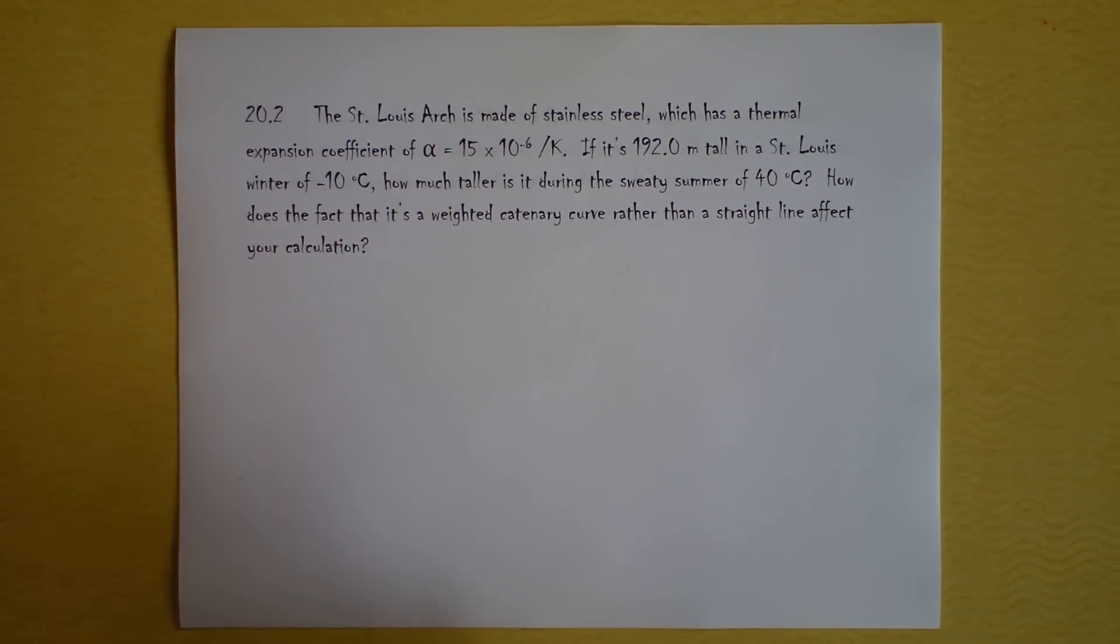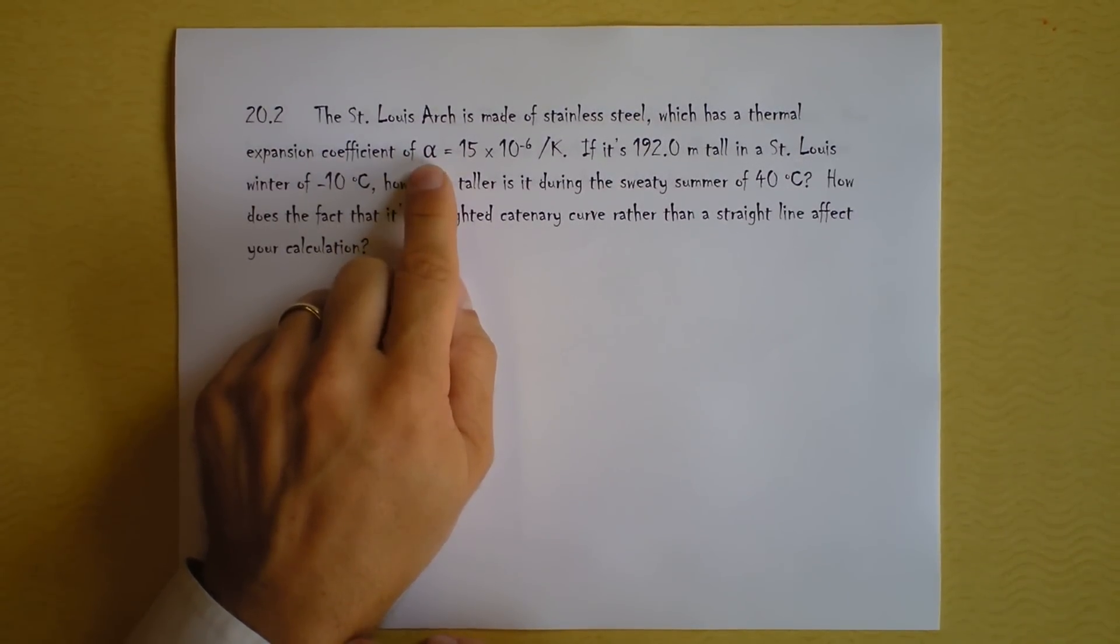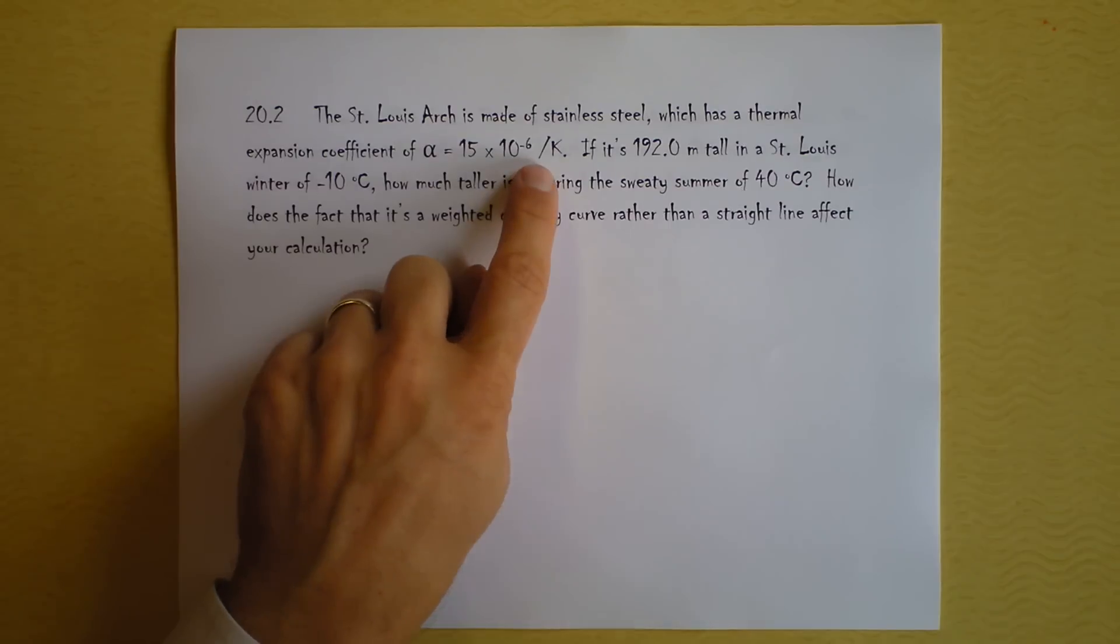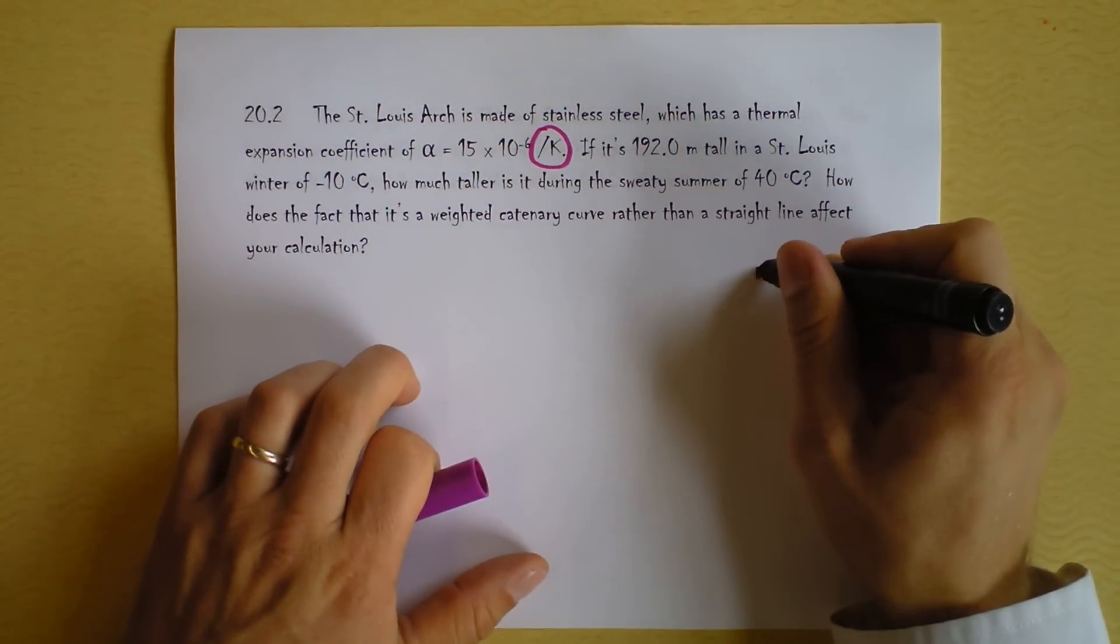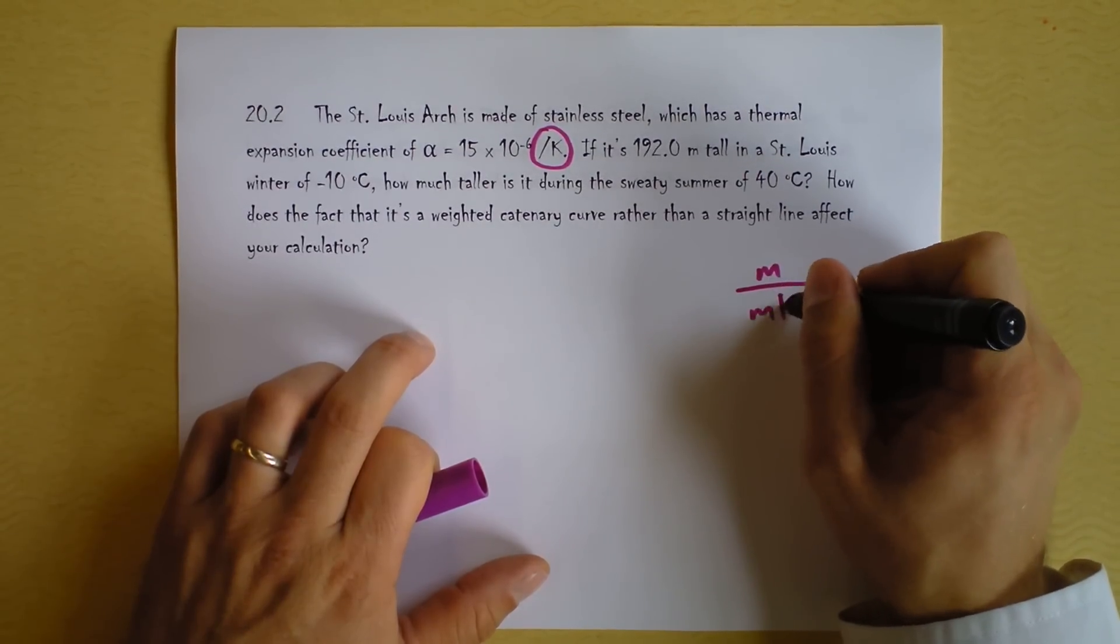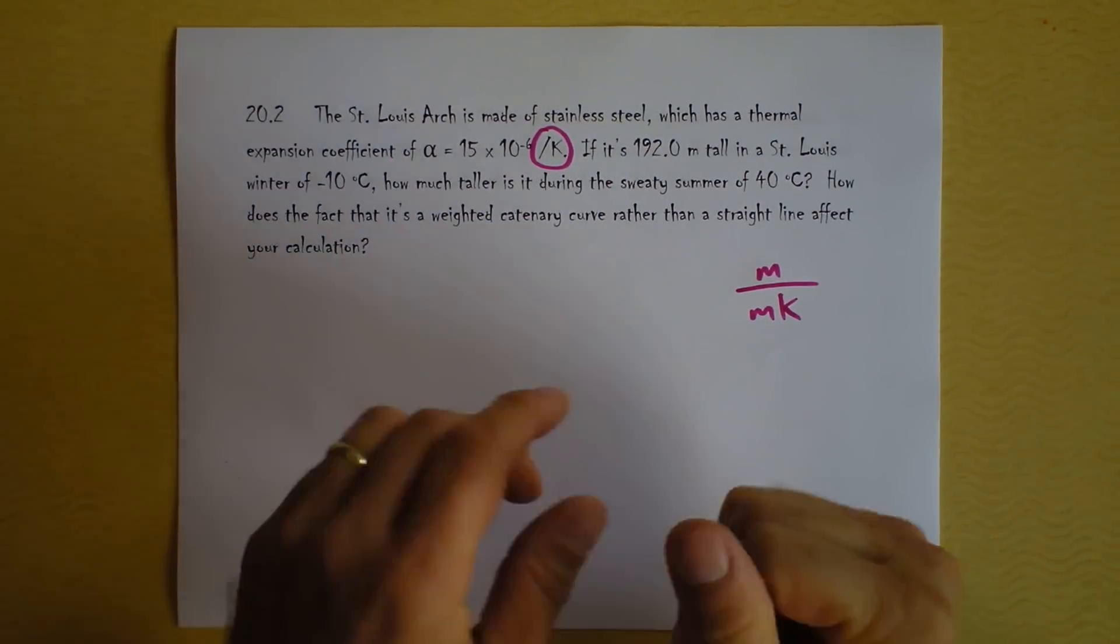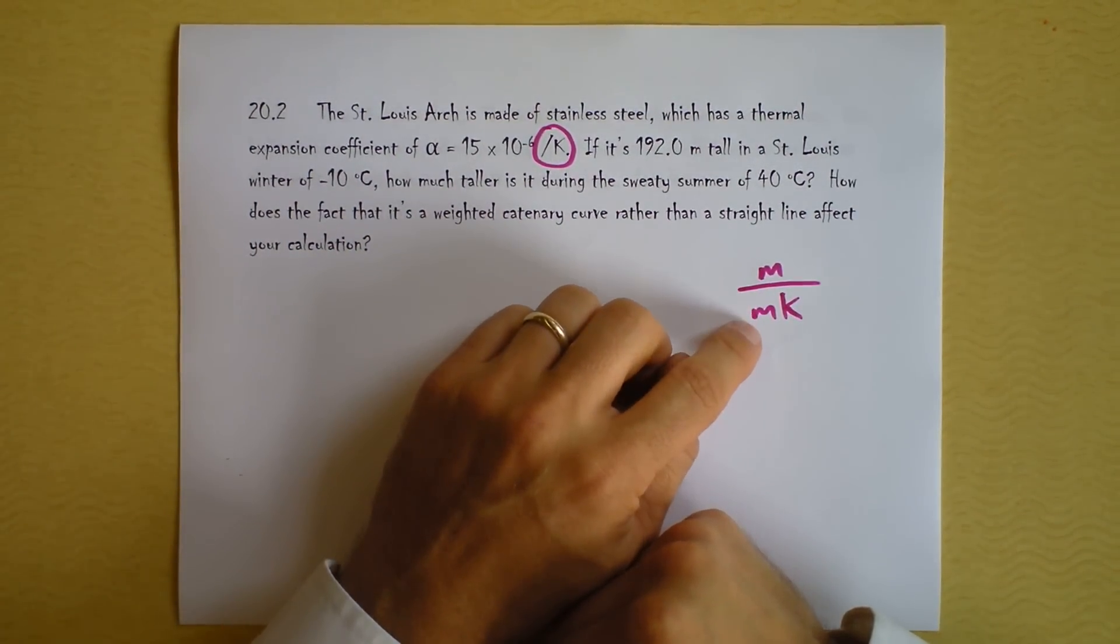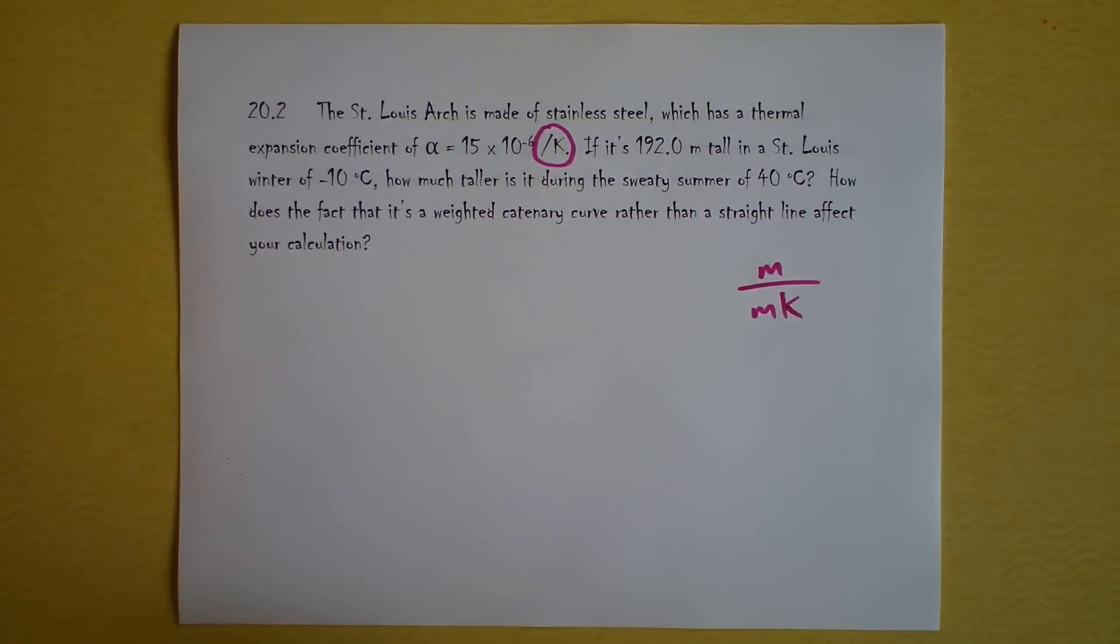But we're going to get back into some technical things. The St. Louis Arch is made of stainless steel and I picked some random type. There are several kinds so this might not be entirely accurate. But I grabbed an alpha which doesn't translate well into the font, sad face, of 15 times 10 to the negative 6th. That's a weird unit. Look at this unit. Per Kelvin. So it's actually meters per meter Kelvin in a lot of text but the meters cancel out. So just to remind you that it's about change in distance over the original distance. But me? No, I'm not going to write them. Stubborn.